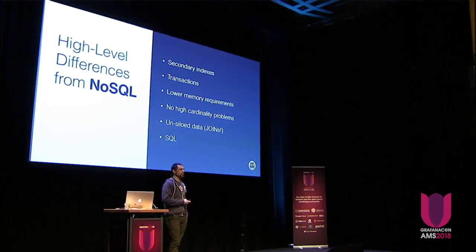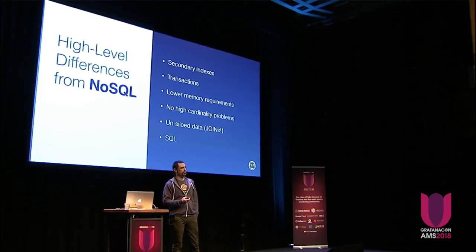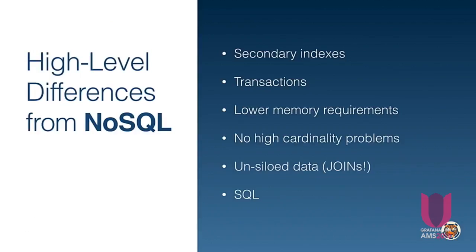We're making sure we're using the right indexes for time columns. You also see much faster deletes. Compared to NoSQL databases, which are common for storing time series data, with TimescaleDB you get secondary indexes — typically not supported in those systems. You get full transaction support, ACID, everything. You typically see lower memory requirements because you can have actual on-disk indexes, avoiding high cardinality problems. You also avoid data silos, can join data together — which is really powerful — and you have full SQL support, a language proven and extended over time.